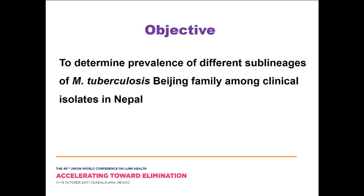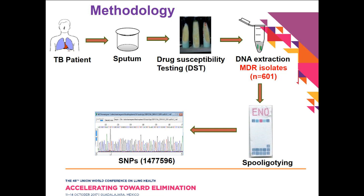For methodology, we collected sputum samples from suspected TB cases and performed drug sensitivity testing after microscopy. There were 601 MDR isolates. We extracted DNA from the MDR isolates and classified them by spoligotyping to understand the prevalent genotype. This is the pattern of the Beijing family in spoligotyping. When Beijing strains were isolated, we further proceeded with SNP identification by multi-locus sequence typing.